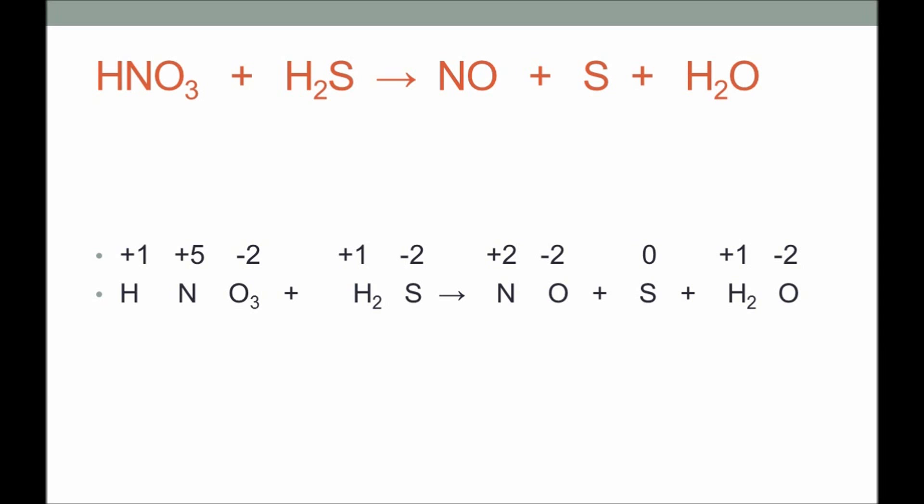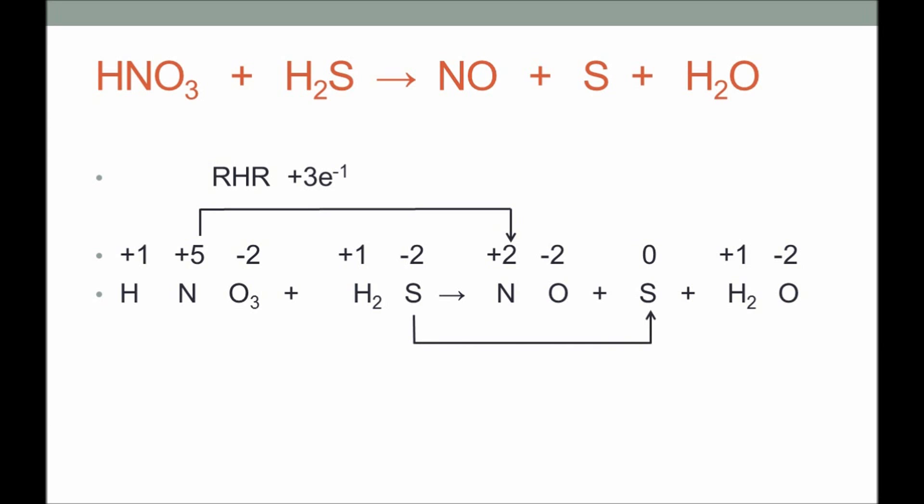Now we look at the elements that undergo a change in oxidation number. Nitrogen has a +5 oxidation number on the left, reducing to +2 on the right. Therefore, this is the reduction half-reaction, and for this reaction to take place we need 3 electrons.